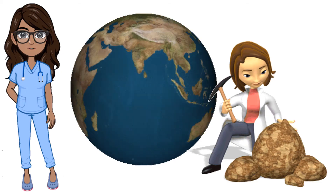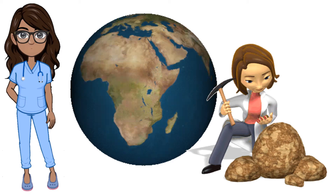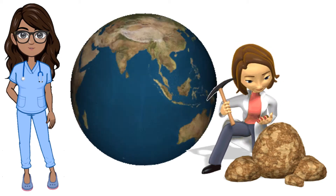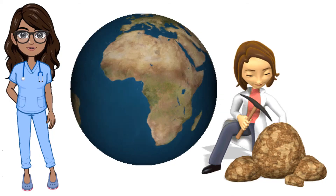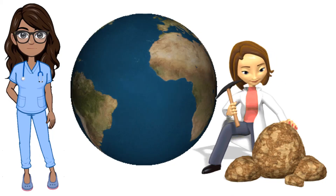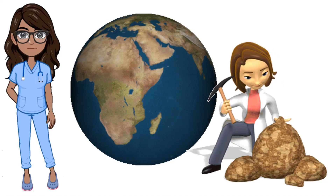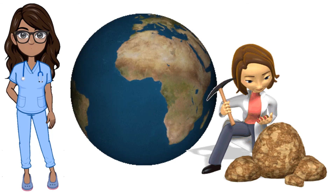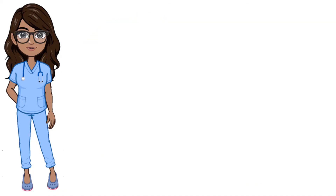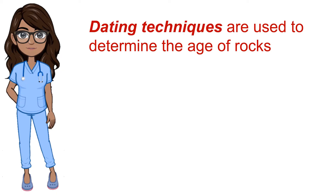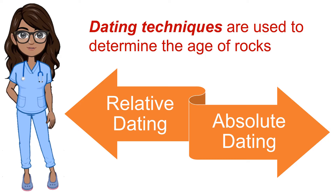Interpreting the earth's history is a primary goal of a scientist in the field of geology. Like a modern day investigator, a geologist must interpret the clues by studying rocks. Geologists find preserved rocks containing evidences and features from the inside, allowing them to unravel the complexities of the past. Dating techniques are used to determine the age of rocks — specifically, how long ago they formed. Geologists establish the age of rocks in two ways: relative and absolute dating.